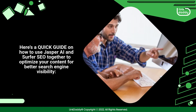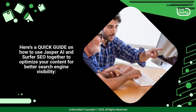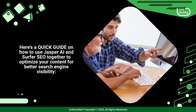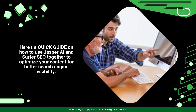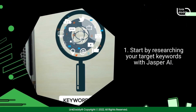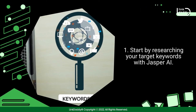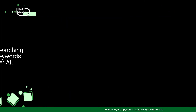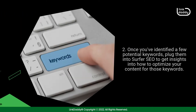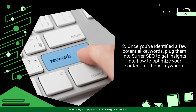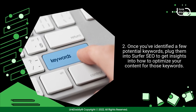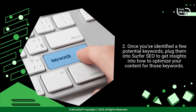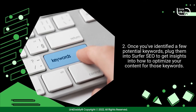Here's a quick guide on how to use Jasper AI and Surfer SEO together to optimize your content for better search engine visibility. Start by researching your target keywords with Jasper AI. Once you've identified a few potential keywords, plug them into Surfer SEO to get insights into how to optimize your content for those keywords.